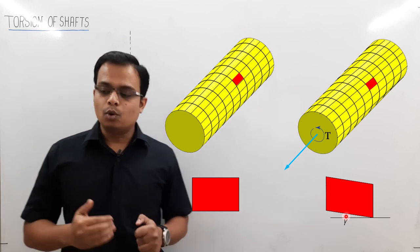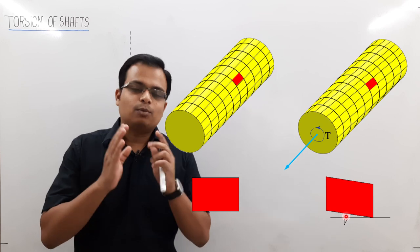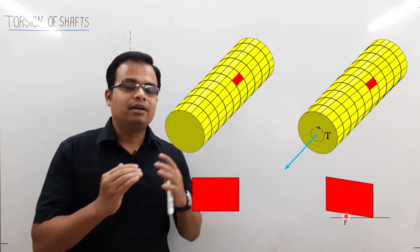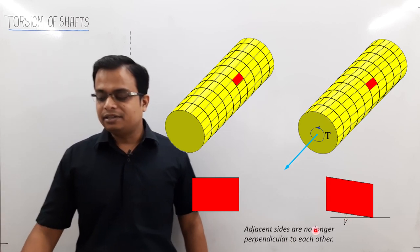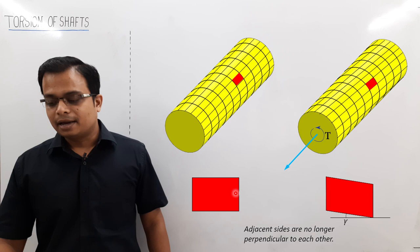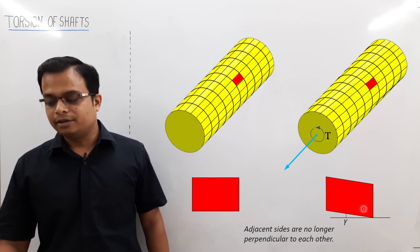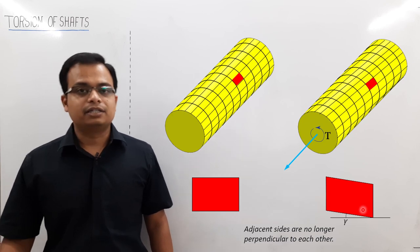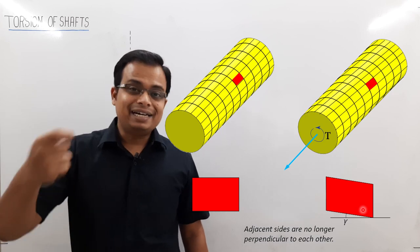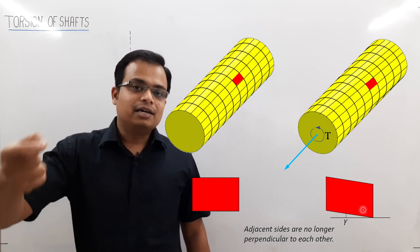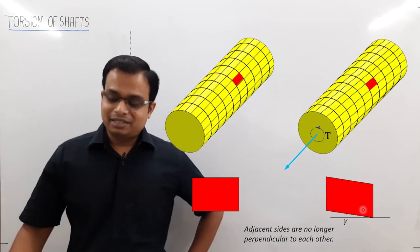This gives us the motivation to investigate further. We will break things down into small pieces, understand the matter, and develop relationships. The conclusion of the experiment is: adjacent sides of the element are no longer perpendicular to each other, which indicates the presence of shear strain, and this will lead us to the development of shear stress.